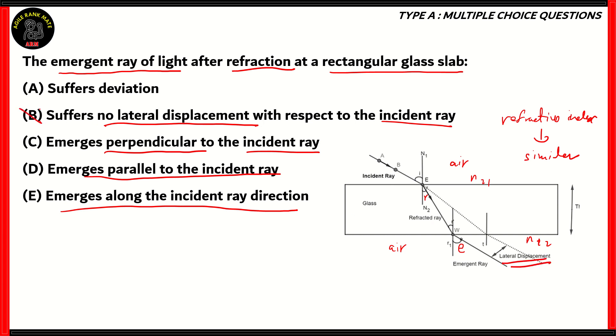So therefore, you can see that option B is incorrect. Emerges perpendicular to the incident ray. Now if this was the incident ray, its perpendicular would be something like that. However, as you can see, the light ray isn't perpendicular. So option C is incorrect. Option E says emerges along the incident ray direction. But this here, the dotted line, is the supposed trajectory. It isn't the actual trajectory. The actual trajectory suffers lateral displacement. So E is incorrect. Suffers deviation. As you can see, there is no deviation. The rays are parallel to each other. So A is incorrect. That means option D, emerges parallel to the incident ray, is the correct option.